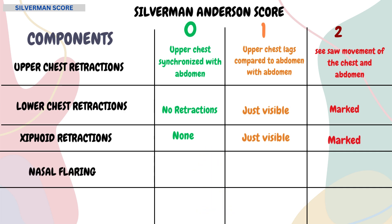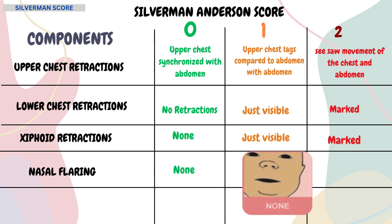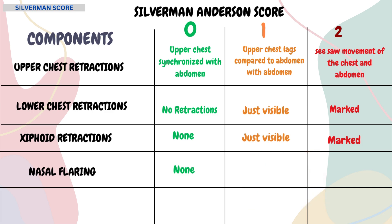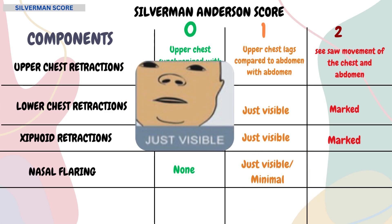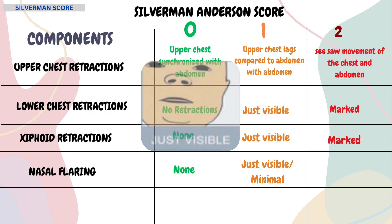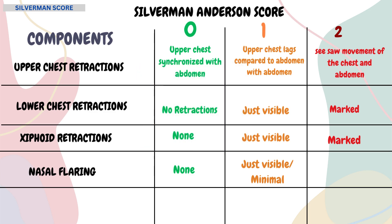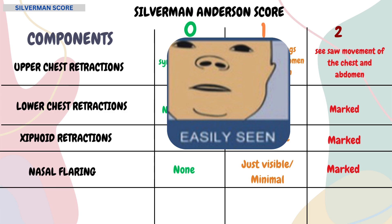Then comes nasal flaring. If there are no signs of widening of the nasal opening or nostrils, a score of 0 is given. If nasal flaring is just visible, a score of 1 is given. If nasal flaring is marked, a score of 2 is given.